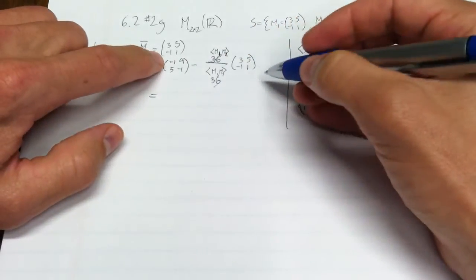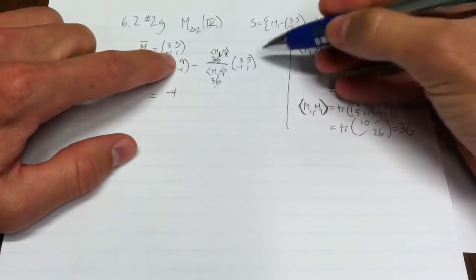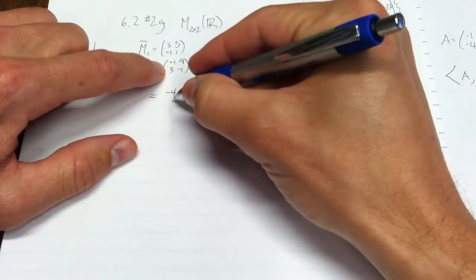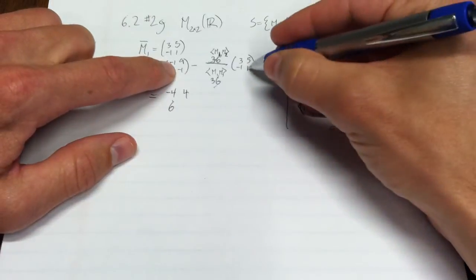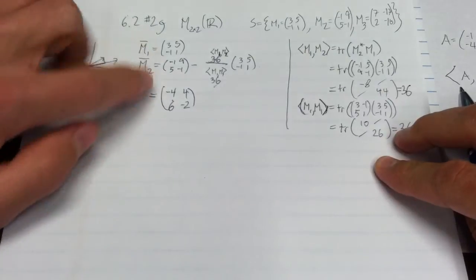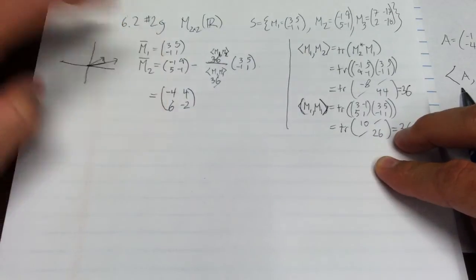We get out, let's see, 1 minus 3 is -4, 9 minus 5 is 4, 5 plus 1 is 6, -1 minus 1 is -2. That is orthogonal to that, meaning that the inner product of those two, you can check, would be 0.